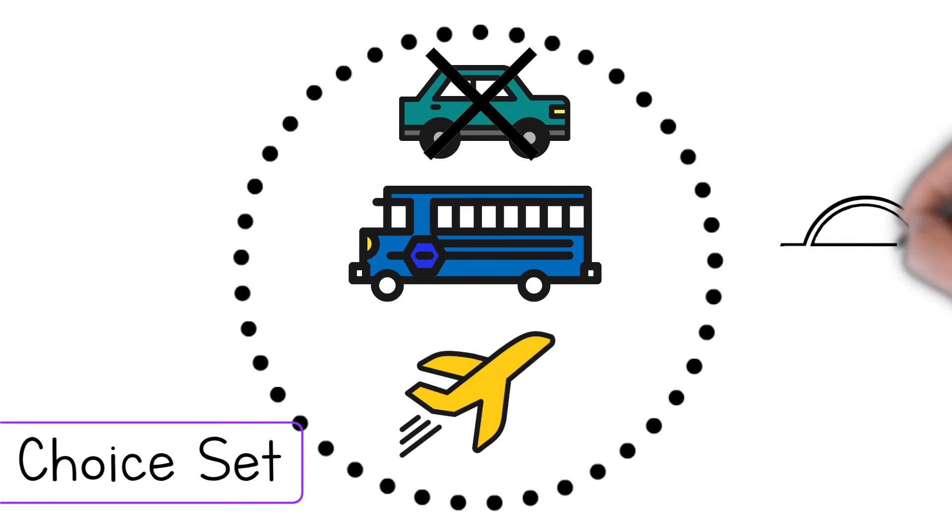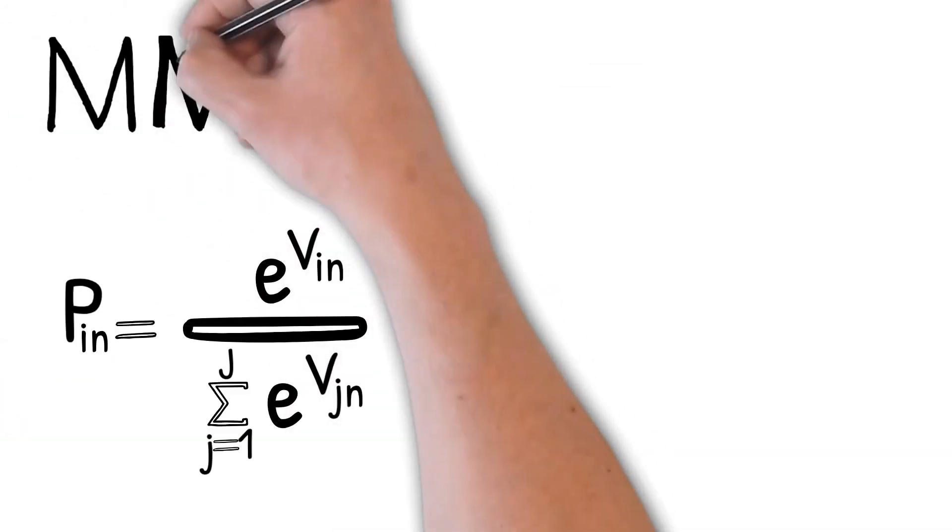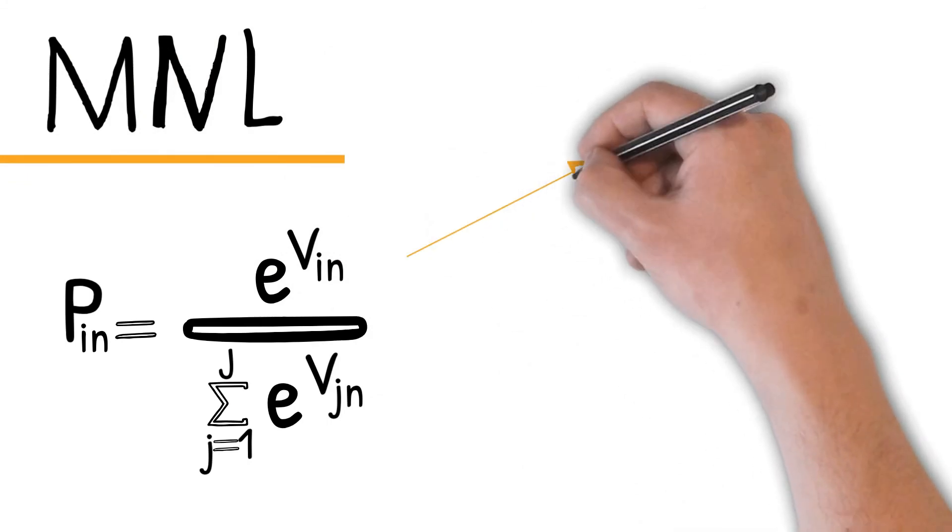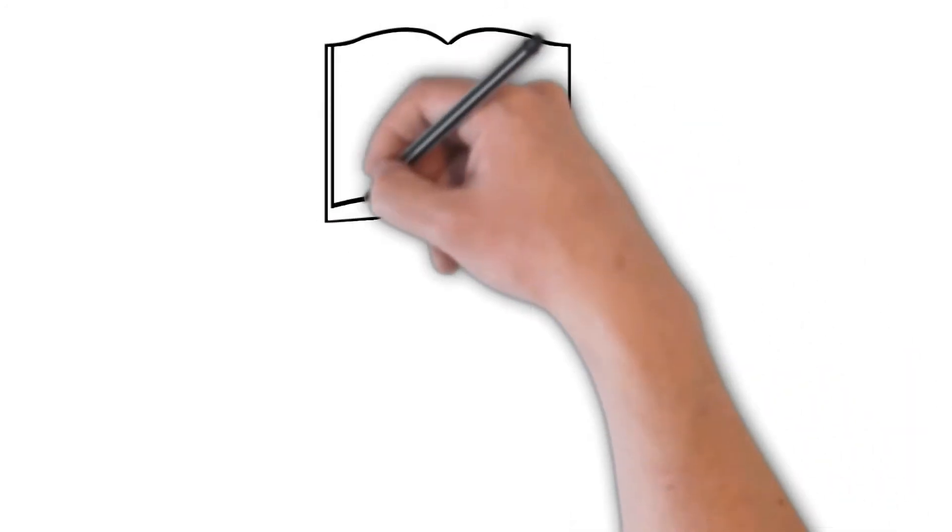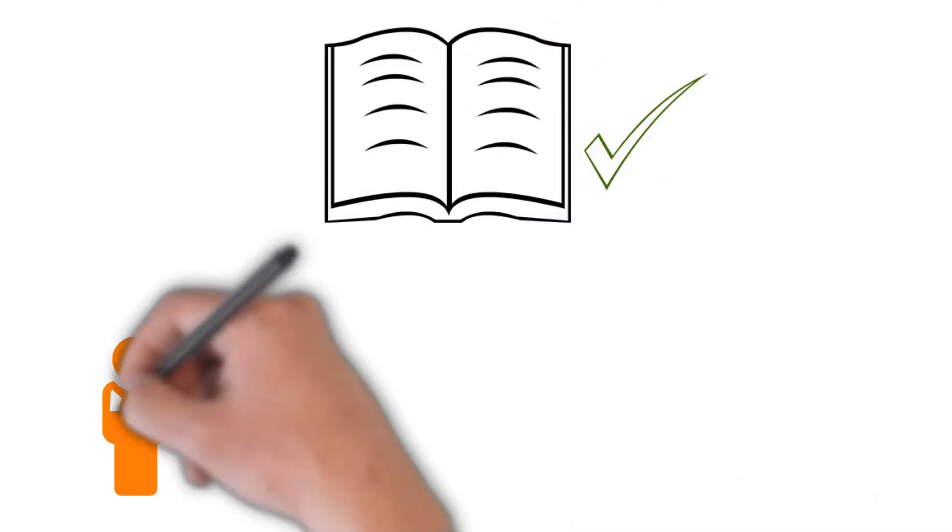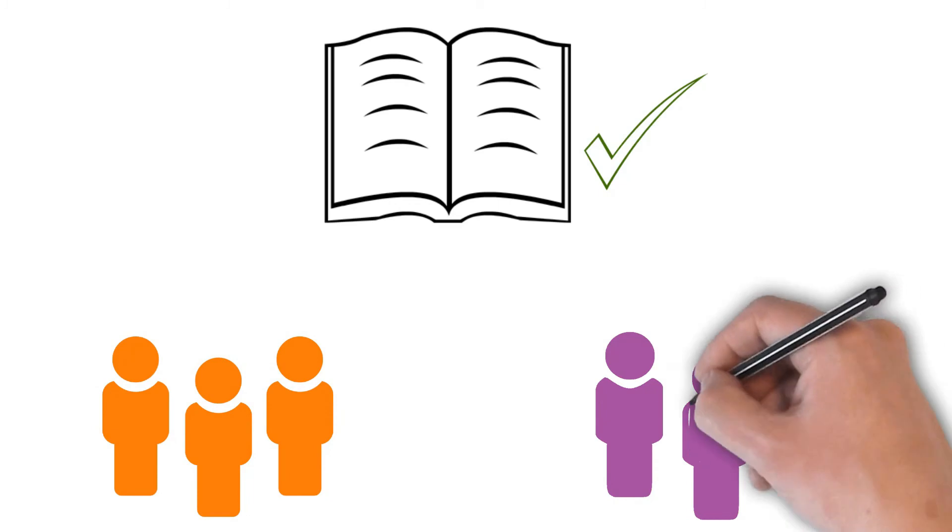Despite the paradox that can be caused, the model itself is complete, easy to use, and interpret the results. The error should not be significant as long as the information is correct and the population is properly segmented. This has been all, so thank you for watching.